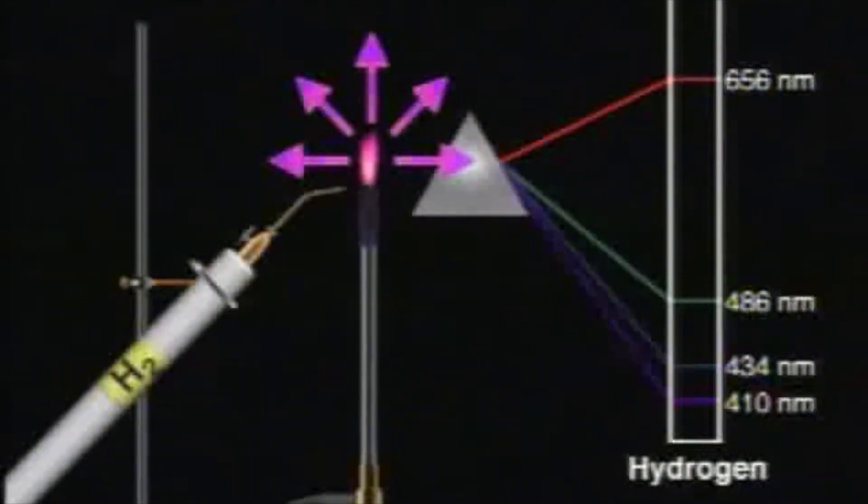Because the spectral lines come at definite intervals, this suggests that specific energy levels exist in the atom.